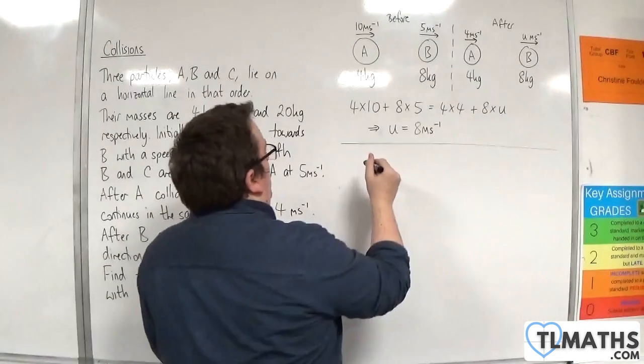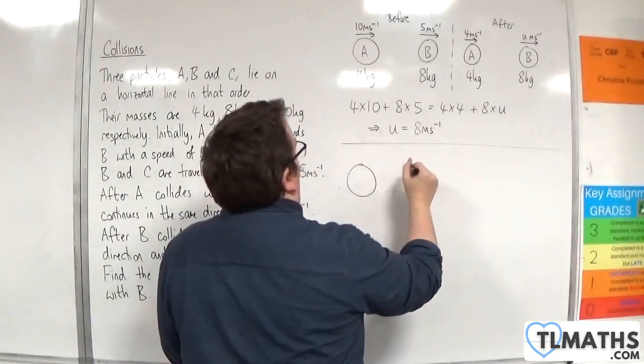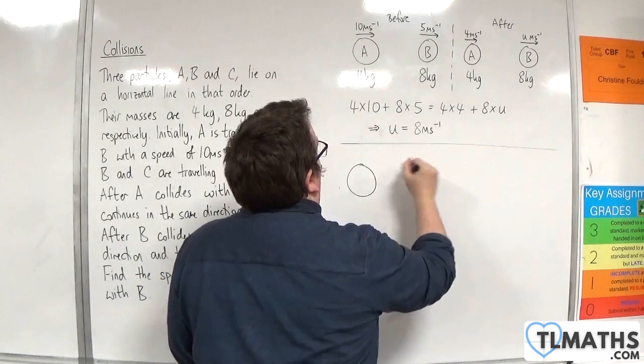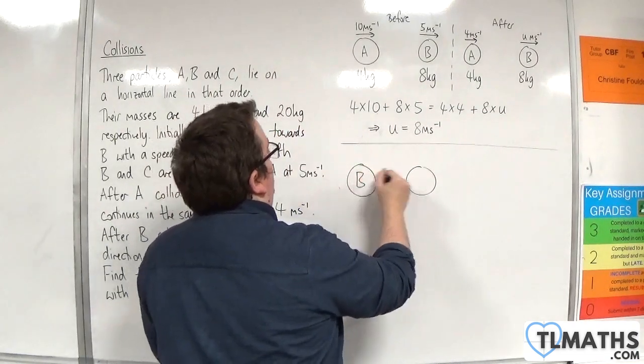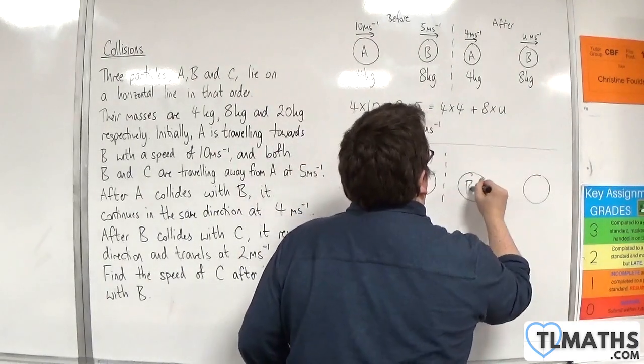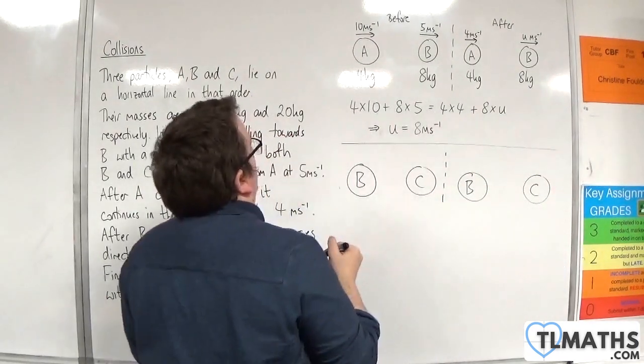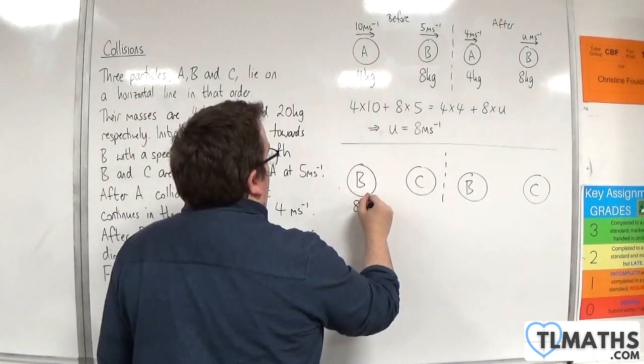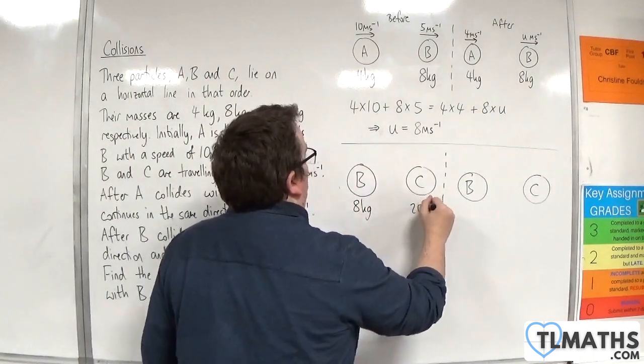So now we can focus our attention on particle B and C. Now particle B has a mass of 8 kilos and particle C has a mass of 20 kilos.